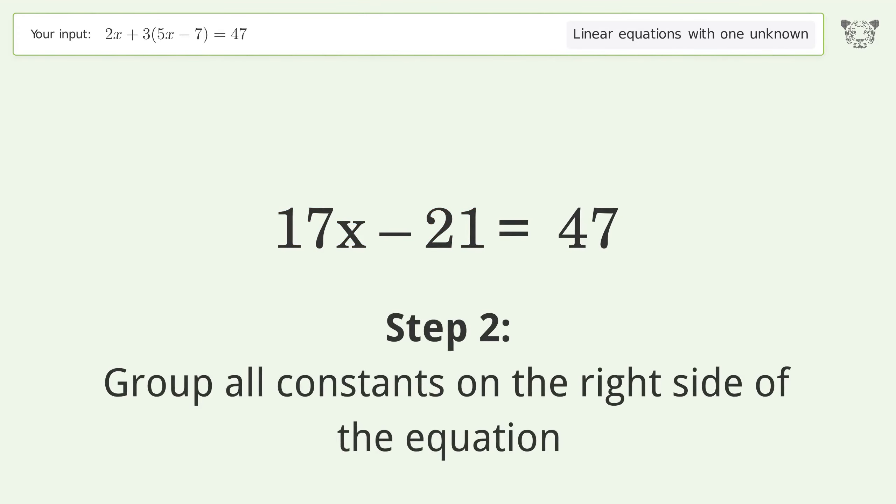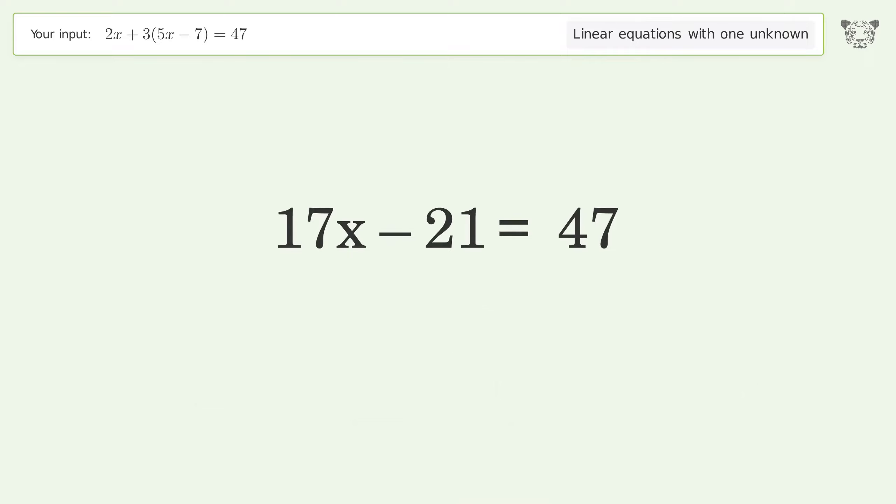Group all constants on the right side of the equation. Add 21 to both sides and simplify the arithmetic.